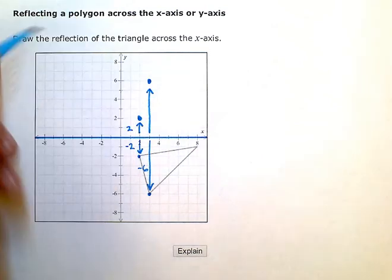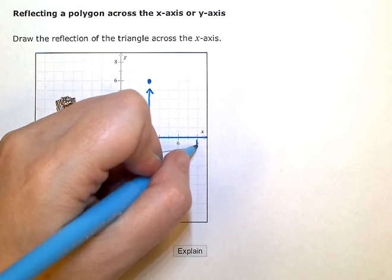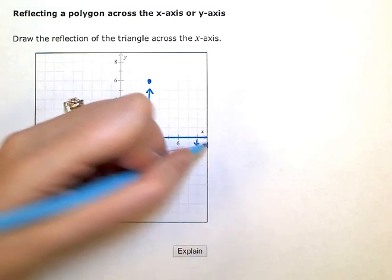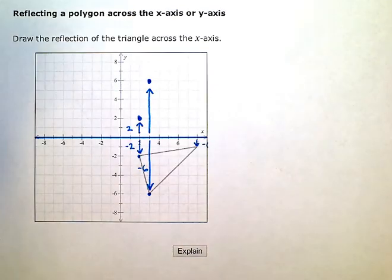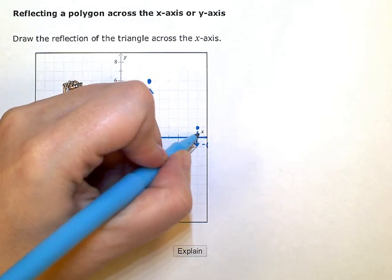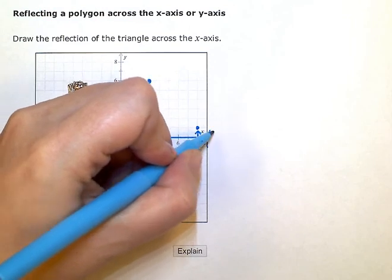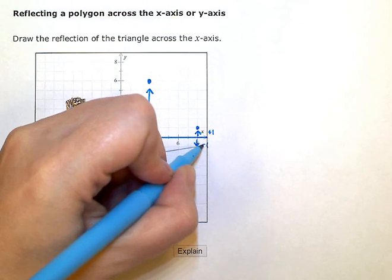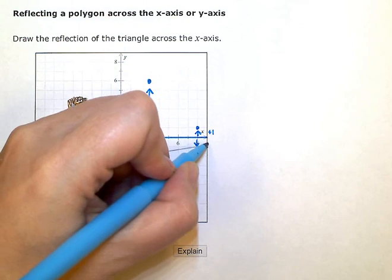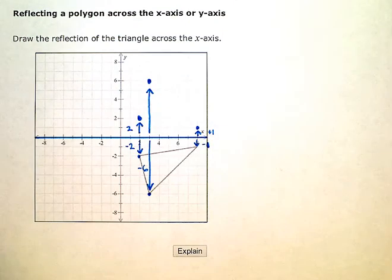This one right here is only one unit below my x-axis. So I need a point that's one unit above. So plus one. This one was minus one. I just can't see my one very well there.